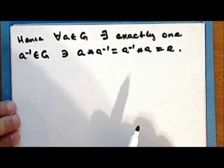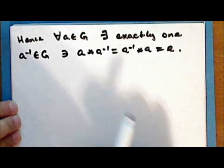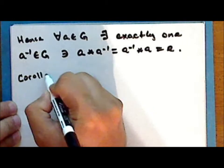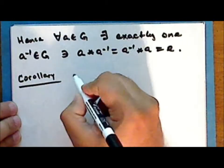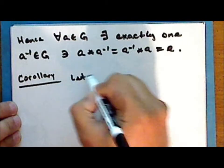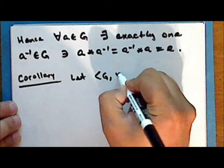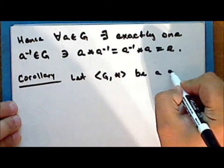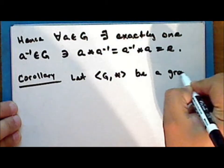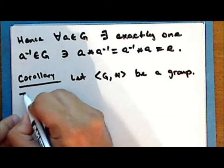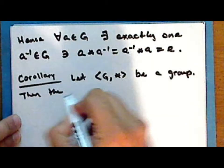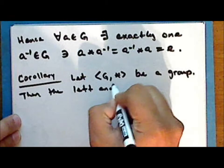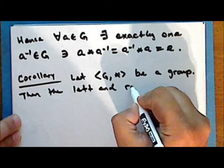This corollary itself has an immediate corollary. Let the set G together with the binary operation star be a group. Then the left and right cancellation laws hold.